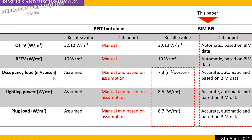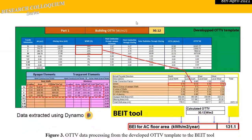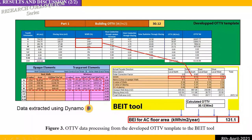Occupancy load is unfortunately assumed in the BIT tool, but using our scripts we can calculate it automatically and accurately based on the design — not just making assumptions that require experience. Similarly, lighting power and plug load are always assumed in BIT, but now we calculate them based on the actual design using our developed scripts. In the end, we export the results to the BIT tool to get the final BI value — Building Energy Intensity — which is 131 kWh per square meter per year.